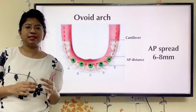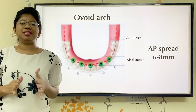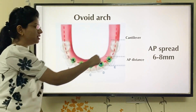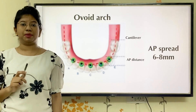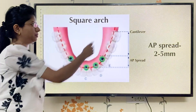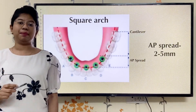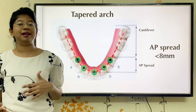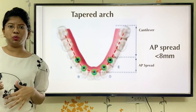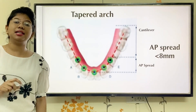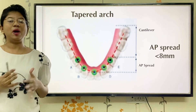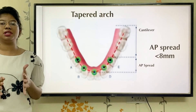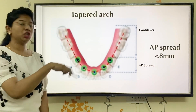While placement of implant, you also need to consider different arch forms, as different arch forms will have different AP spread. In the ovoid arch form, you get an AP spread of 6 to 8 mm. In the square arch, you get an AP spread of 2 to 5 mm. And in the tapered arch, you get maximum AP spread. So if you see a tapered arch in your patient, you can go for more cantilever. While planning, you need to see what kind of arch your patient has. Tapered arch allows the most cantilever because of the arch form.